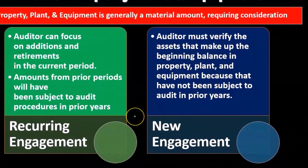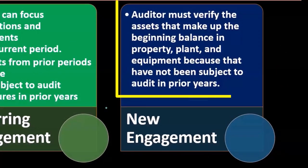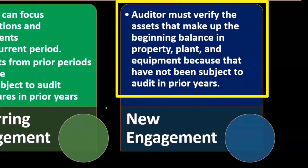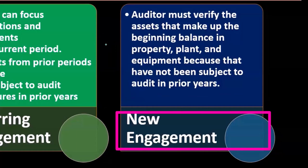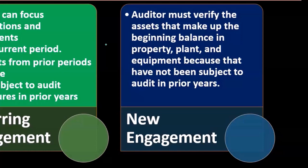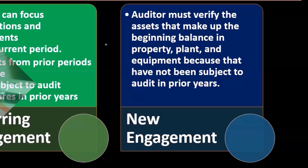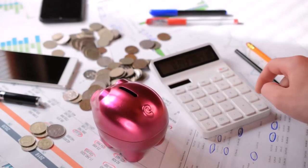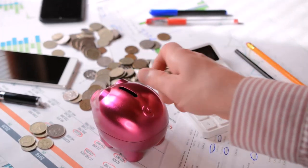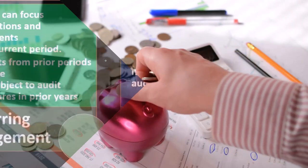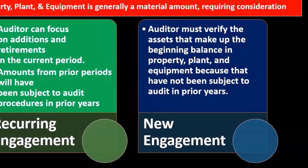In a new engagement, however, the auditor must verify assets that make up the beginning balance in property, plant, and equipment because they have not been subject to prior audits. New engagements are much more complex with regard to PP&E, since we can't rely on prior year audits for beginning balances. We have to do more testing for the beginning balance items, and that can take more time.